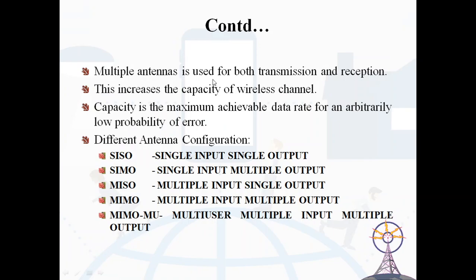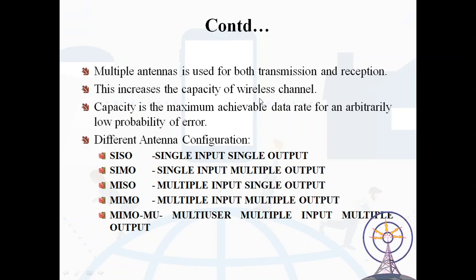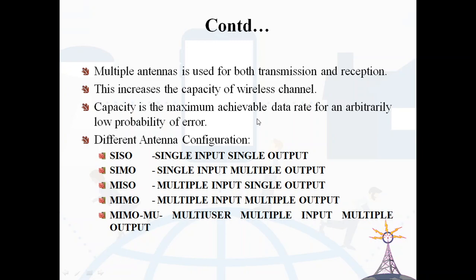Multiple antennas are used for both transmission and reception. This increases the capacity of the wireless channel. Capacity is the maximum achievable data rate for an arbitrarily low probability of error.